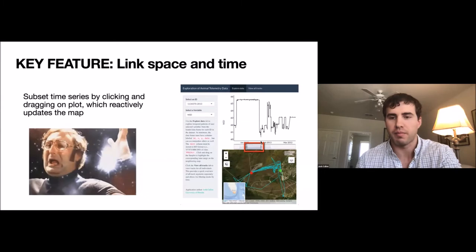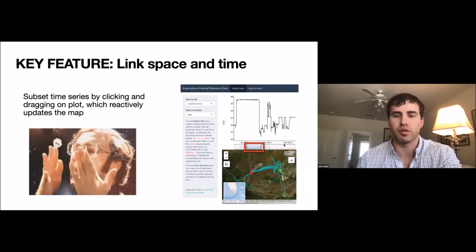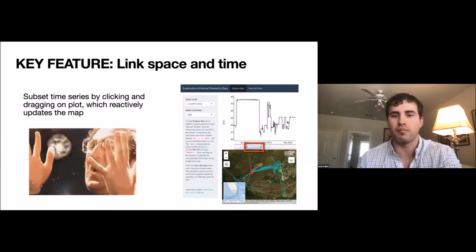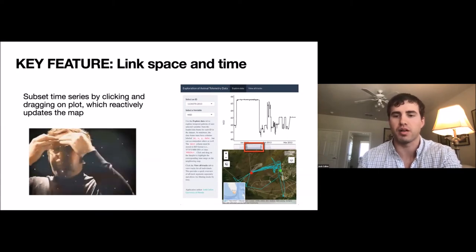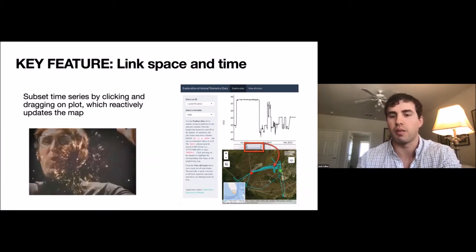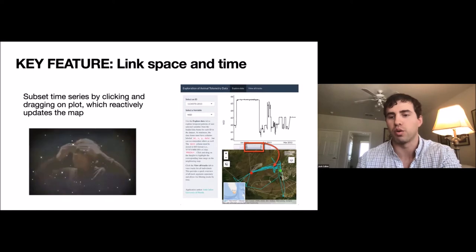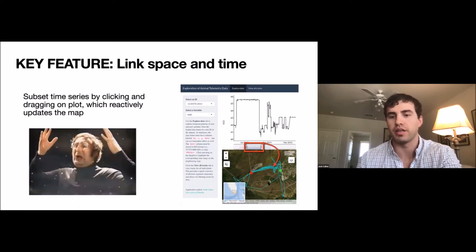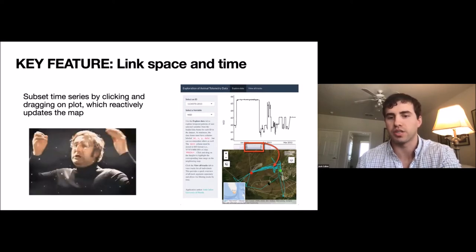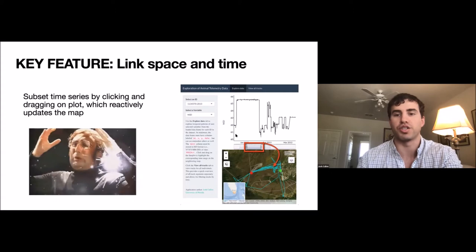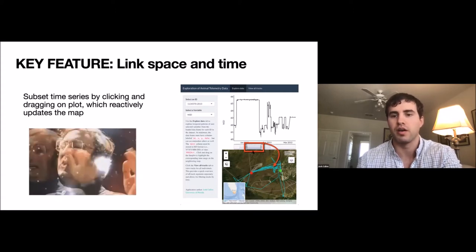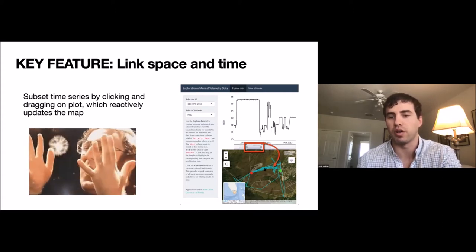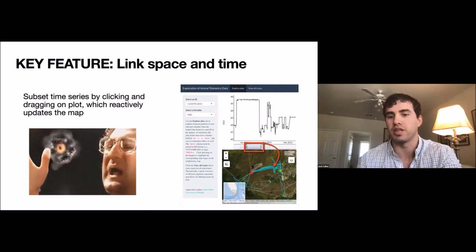In this screenshot on the right, the plot shows only a subset of the entire time series highlighted in a red box, and that reactively updates what is shown on the map. The highlighted turquoise section of the track corresponds to that selected time window, while everything else outside of that window is shown in gray.